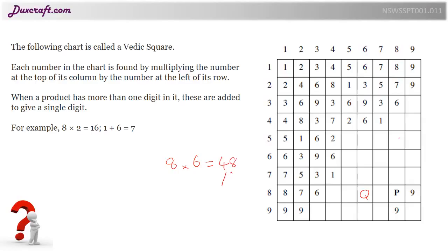But what do we do when we have a two-digit product? We have to add them together. So we end up with 4 plus 8, which equals 12.